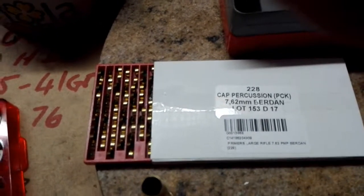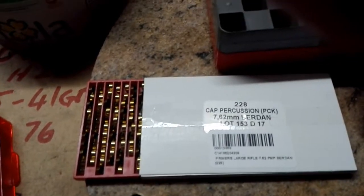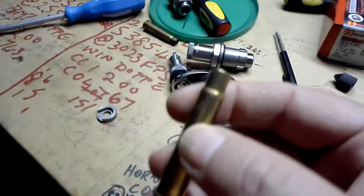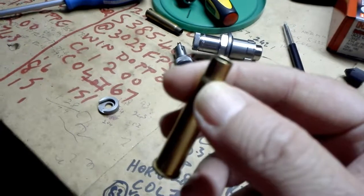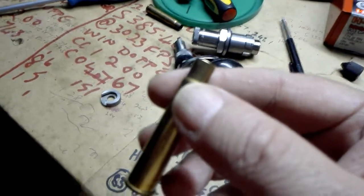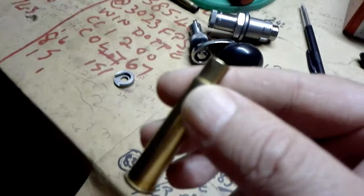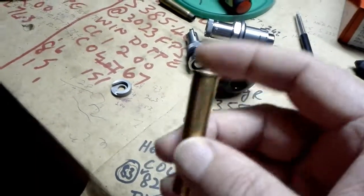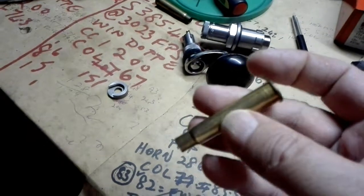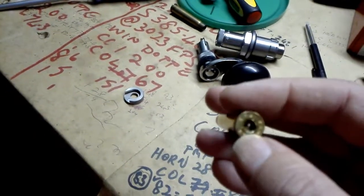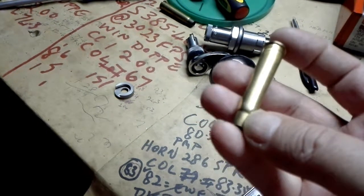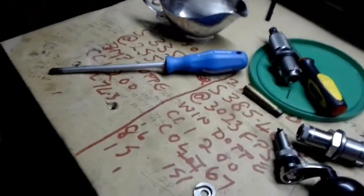The next step would then be to trim the cases to the required length and to a uniform length, all of them. To do that you cannot use the normal Lee case trimming device because that one actually pushes through the flash hole. It's got a little guide that pushes through the flash hole, so therefore I use this Lee quick trim.